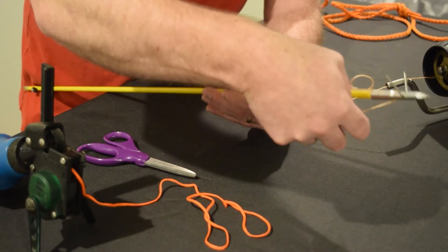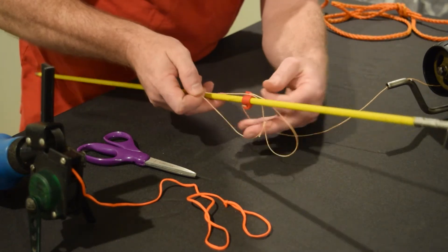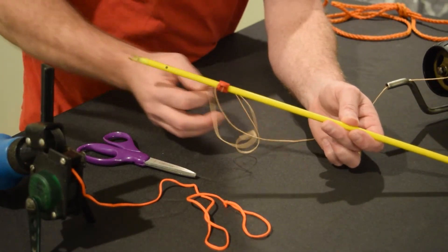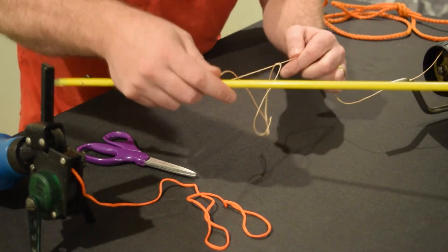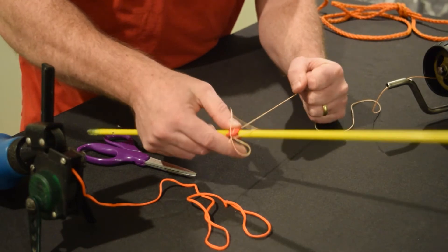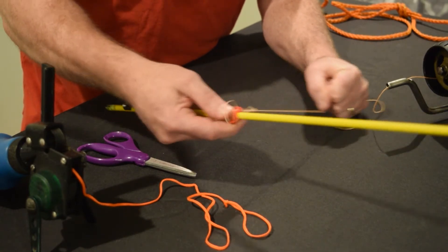Wrap it down the arrow, around the tip, come down to the nock, wrap it around the nock, and then start pulling the line back through. You'll get a little resistance from the knot, but the knot will pull back through the safety slide.